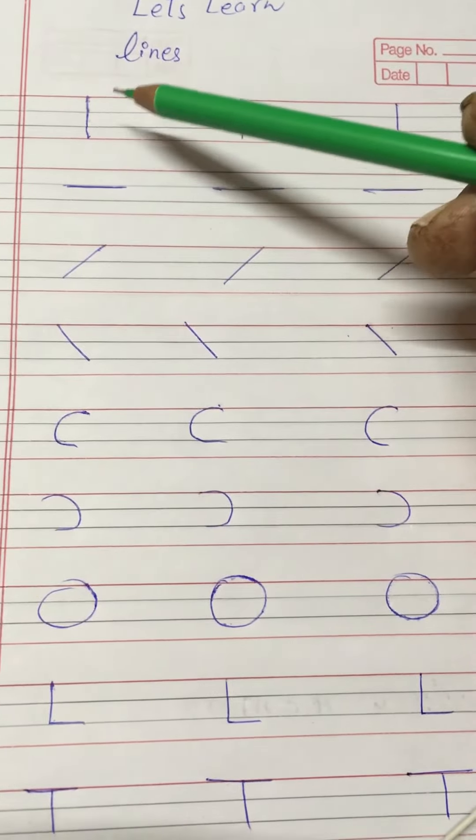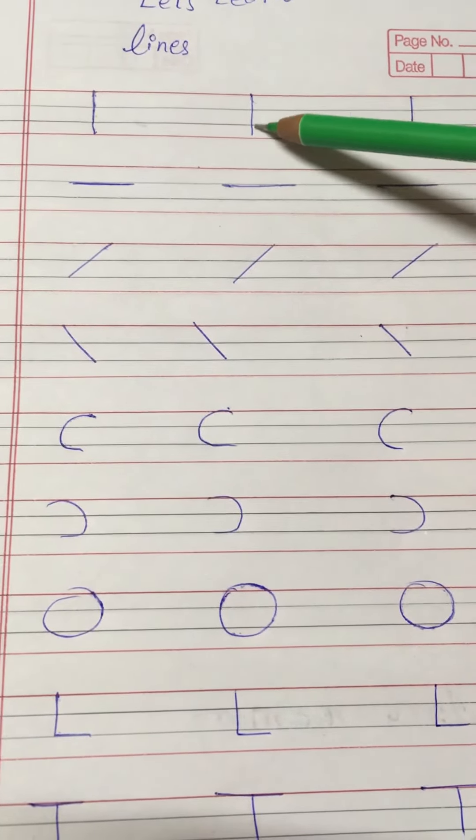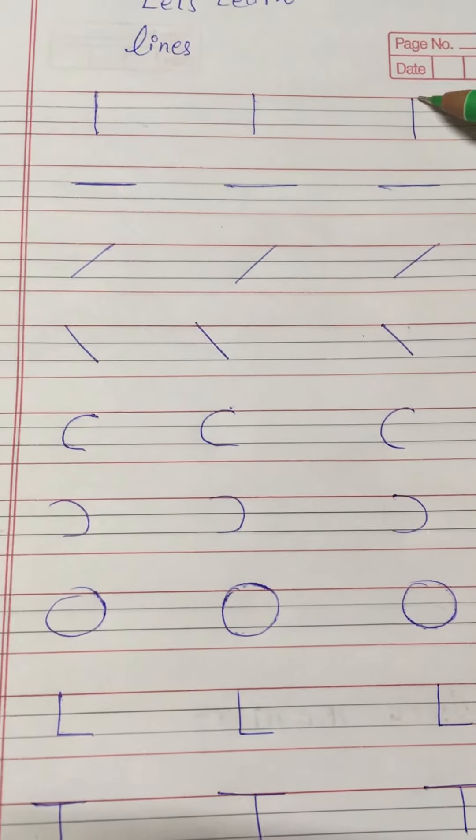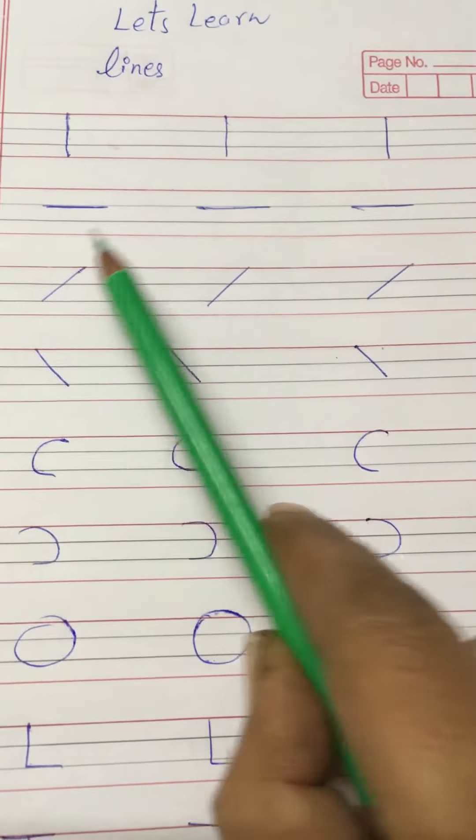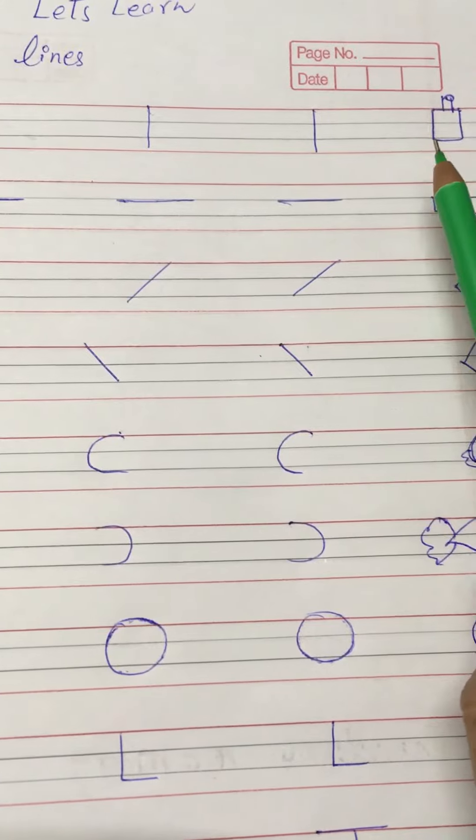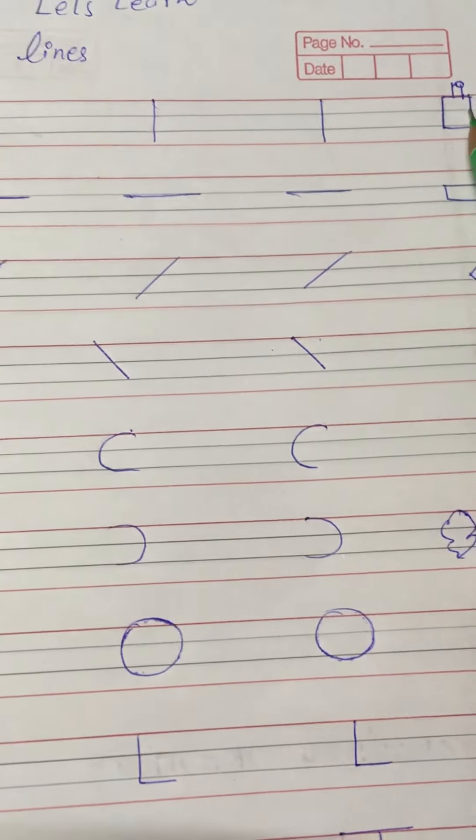Speak now, speak with me: this is standing line, standing line. Now, standing line se sab se pahle bachyo dekhoh hum ne kya bana diya - this is a bat, joh is taray ki do standing line se mil kar bana.